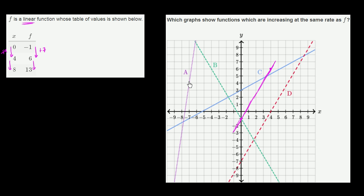A is increasing faster than f. C is increasing slower. B is decreasing, so it's not even close. But d seems to have the exact same inclination, the exact same slope as f. So d is what we would go with.